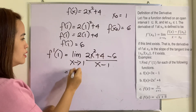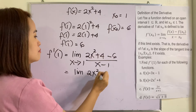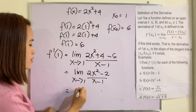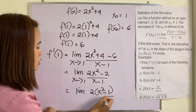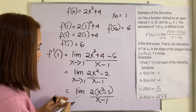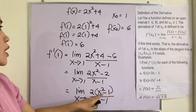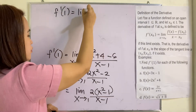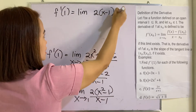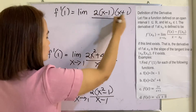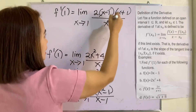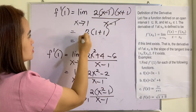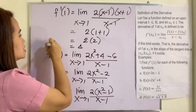We simplify to the limit of 2x squared minus two over x minus one as x approaches one. Factoring: two times (x squared minus one) over (x minus one). Using the difference of two squares, x squared minus one factors as (x minus one)(x plus one). The (x minus one) terms cancel, leaving the limit of two times (x plus one) as x approaches one. Substituting gives two times (one plus one), which is two times two, so f prime of one equals four.